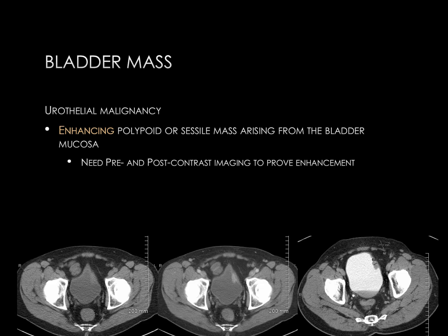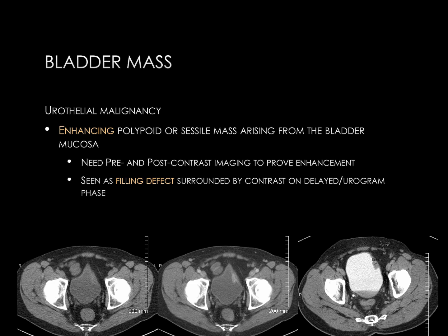At the bottom of the slide, you see three axial CT images through the pelvis. The left image is pre-contrast, the middle image is venous phase, and the right image is delayed phase, or urogram excretory phase. At the anterior left aspect of the bladder, there is an enhancing mass, which you can see on the middle image, clearly increased in density from the non-contrast image. On the delayed phase, the mass is outlined by excreted contrast material. This is a typical appearance of a mass on the delayed or urogram phase — it's seen as a filling defect surrounded by excreted contrast.